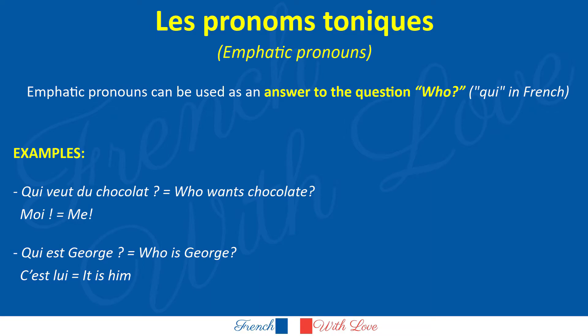Emphatic pronouns can be used as an answer to the question 'who'. For example: Qui veut du chocolat ? — Who wants chocolate? Answer: Moi. — Me.